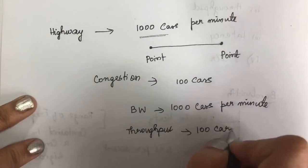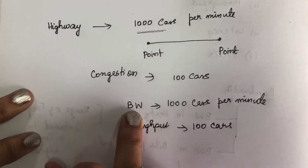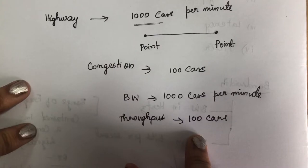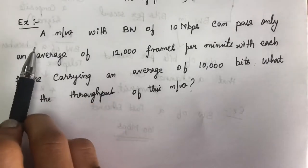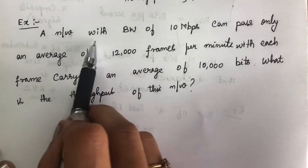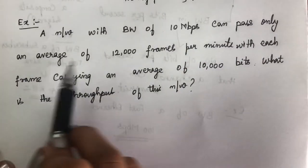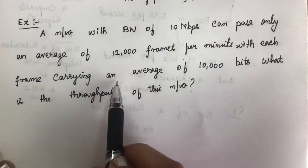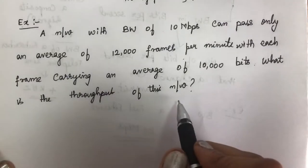Bandwidth tells you the maximum capacity of a channel, and throughput tells you the actual capacity it can transmit. For example: a network with a bandwidth of 10 Mbps can pass only an average of 12,000 frames per minute, with each frame carrying an average of 10,000 bits. What is the throughput of this network?